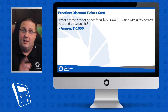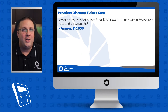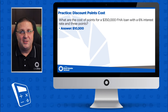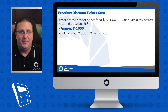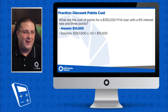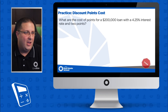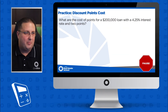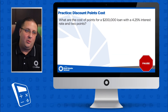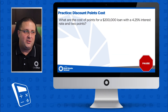Alright, now that you know my trickery, let's try another one. What is the cost of points for a $200,000 loan with a 4.25% interest rate and two points? Hit pause and when you have the answer, hit play.